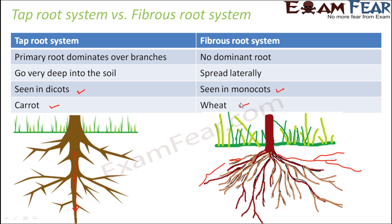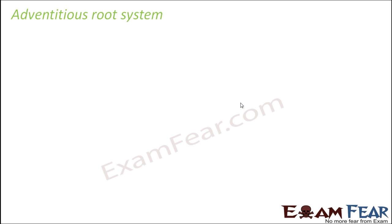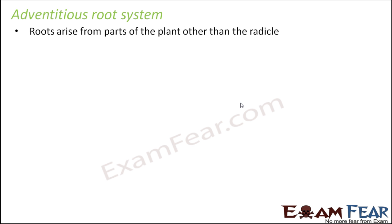Now the second broad type of root system is the adventitious root system. The interesting part is that in adventitious roots, roots arise from parts of the plant other than the radicle. Till now we always thought that inside the seed we have one radicle and one plumule — the radicle grows to form the root and the plumule grows to form the shoot. But in many plants the roots do not develop from the radicle; instead they develop from some other part of the plant.